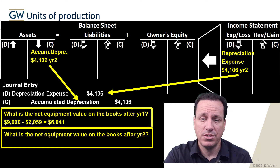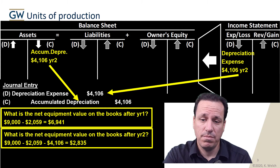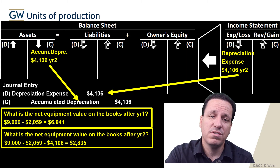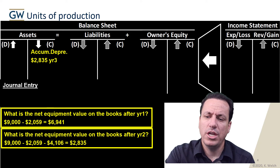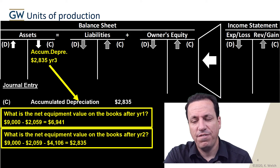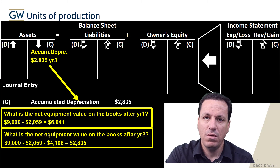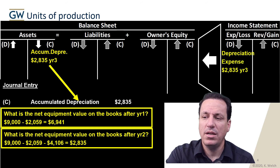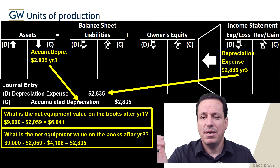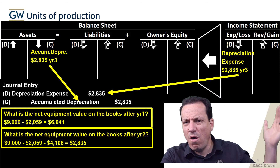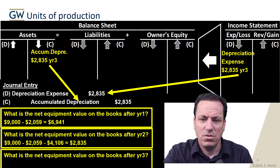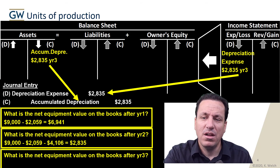The net book value in year two: 9 minus 2 minus 4 gives us $2,835 left as the net value of the asset net of accumulated depreciation. In the third year, accumulated depreciation gets credited $2,835 and depreciation expense gets debited $2,835. Debits equal credits. We took $2,000 in the first year, $4,000 in the second year, and then another $2,000 in this year.